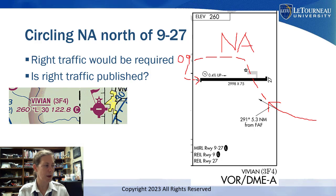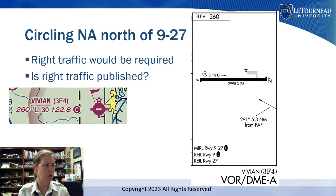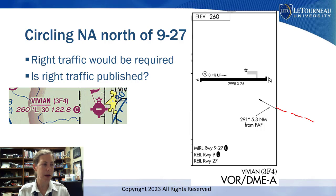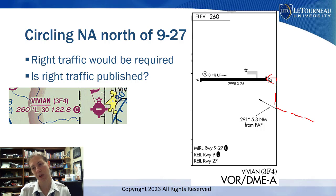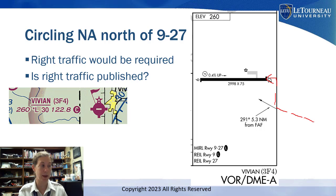Back to the Vivian example: the only runway I can really circle to at Vivian would be runway 27. As I see the airport, I could enter a left base and get myself lined up on runway 27, assuming I saw it in time and had the space to maneuver.